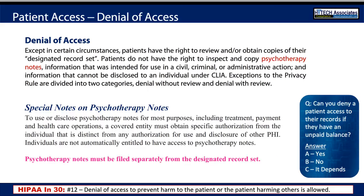HIPAA does provide for exemptions where you can deny a patient access to their medical records — mainly if you feel the patient could cause themselves harm or harm others if you release that information to them, or if the information is used for a criminal, civil, or administrative action.